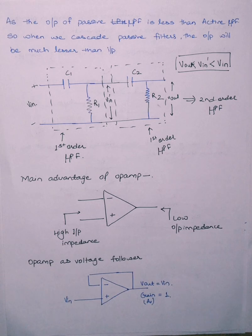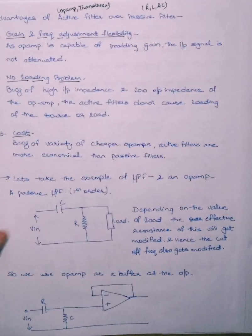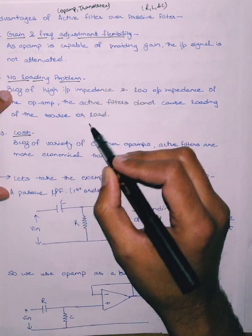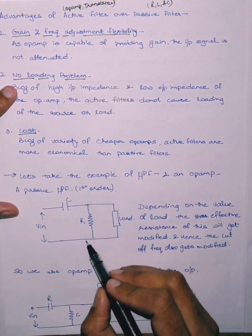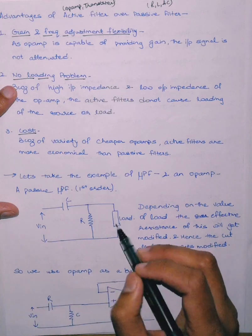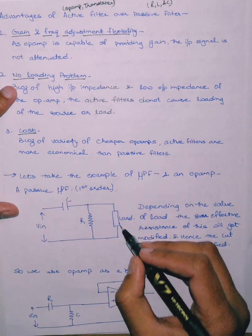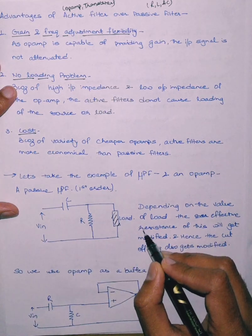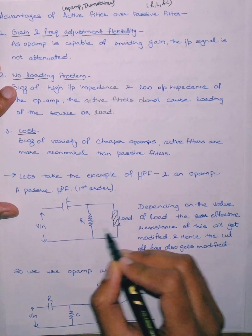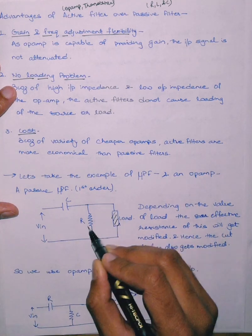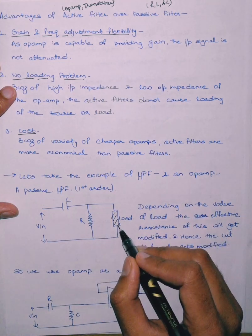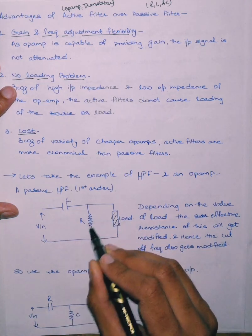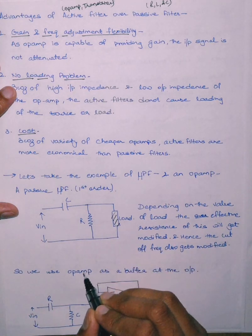The second advantage is no loading problem. Because of the high input impedance and low output impedance of the op-amp, active filters do not cause a loading problem on the source or load. To discuss this, consider a first order high pass filter with a load connected across the resistor. Depending on the load value, the effective resistance changes — if the load is high or low, the parallel combination with R results in a different effective value.